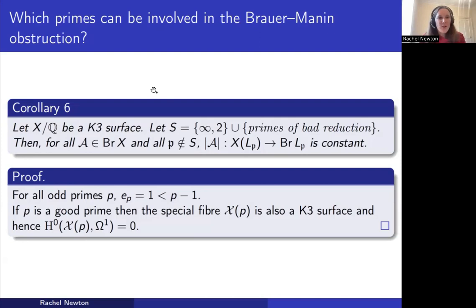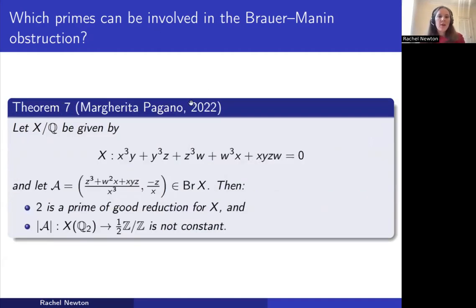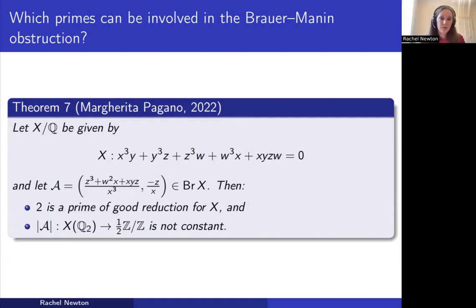However, so far we only showed that all other evaluation maps are constant — we haven't shown that the evaluation map at 2 is actually non-constant. This was solved by Margarita Pagano, who gave an explicit example of a K3 surface over Q and an element in its Brauer group such that 2 is a prime of good reduction for X, and yet the evaluation map is not constant at 2. This shows the answer to Swinerton-Dyer's question can indeed be no, even for a K3 surface over Q.